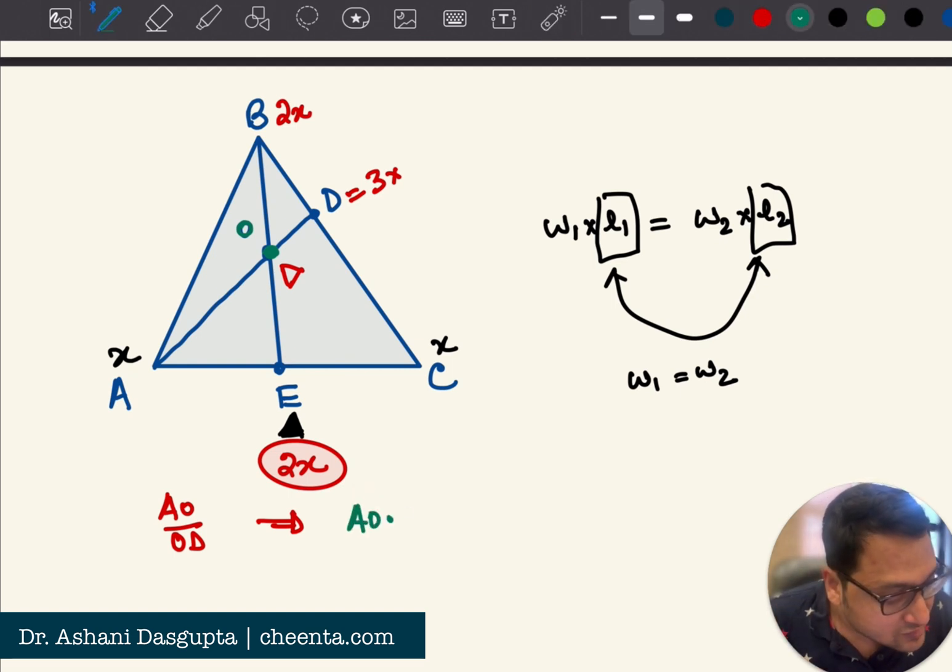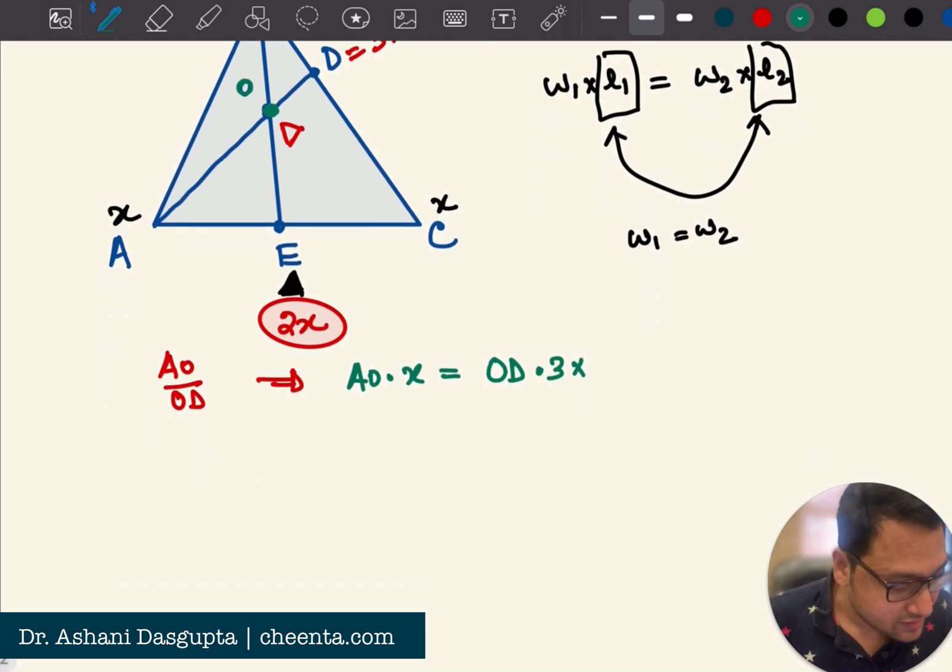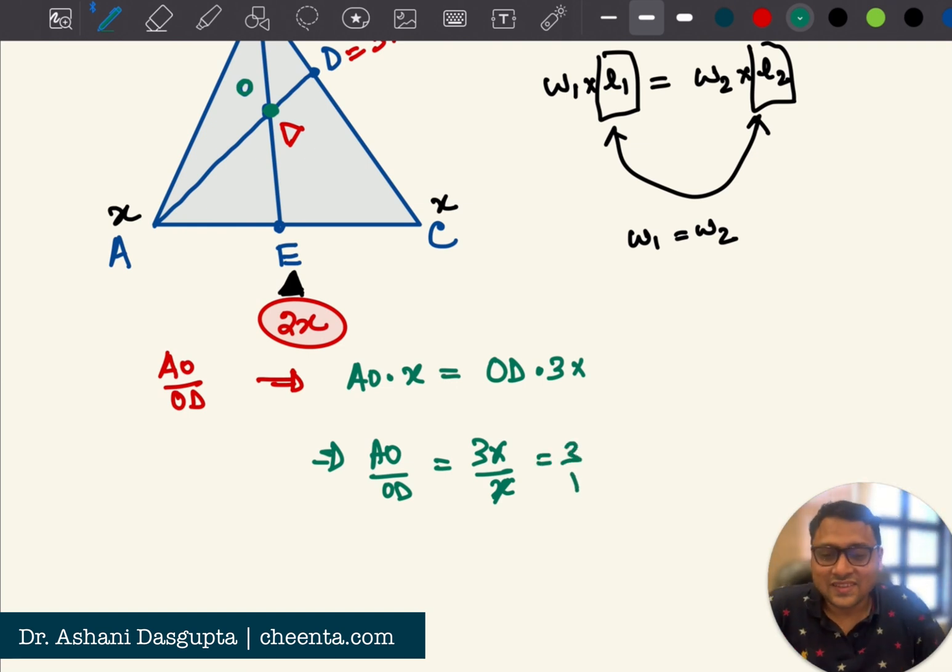let me write that in this color, AO times x is equal to OD times 3x. So now you know what is AO over OD, right? AO over OD is equals to 3x over x, which is 3 is to 1. Isn't that wonderful?